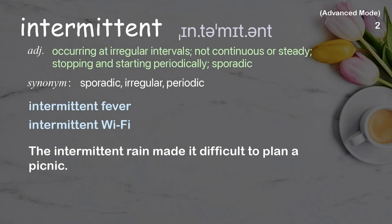Intermittent: occurring at irregular intervals, not continuous or steady; stopping and starting periodically; sporadic. Examples: intermittent fever, intermittent wi-fi. The intermittent rain made it difficult to plan a picnic.